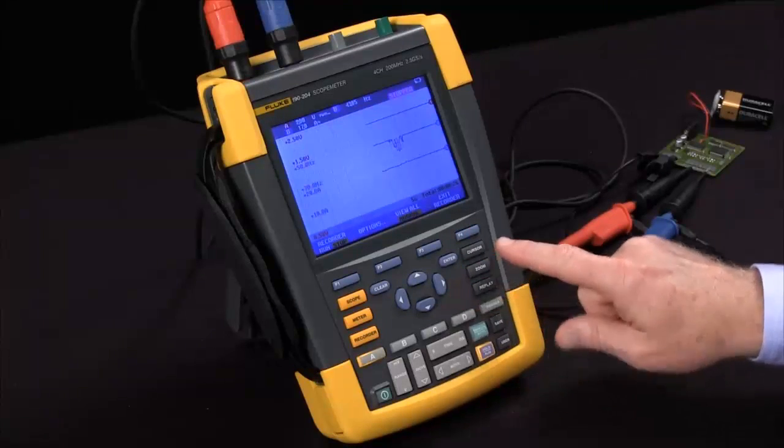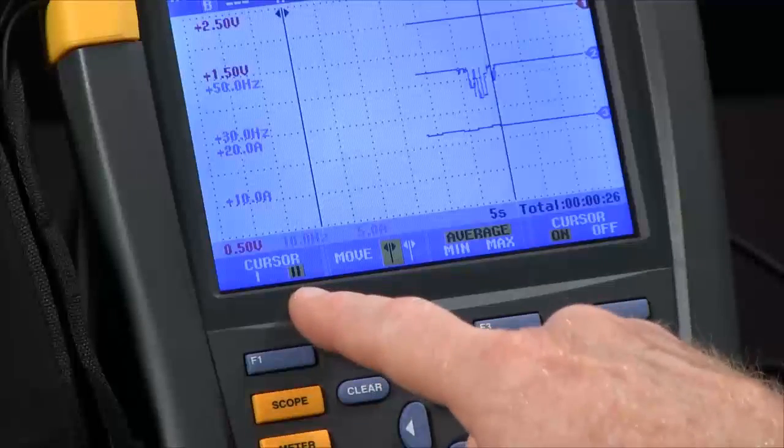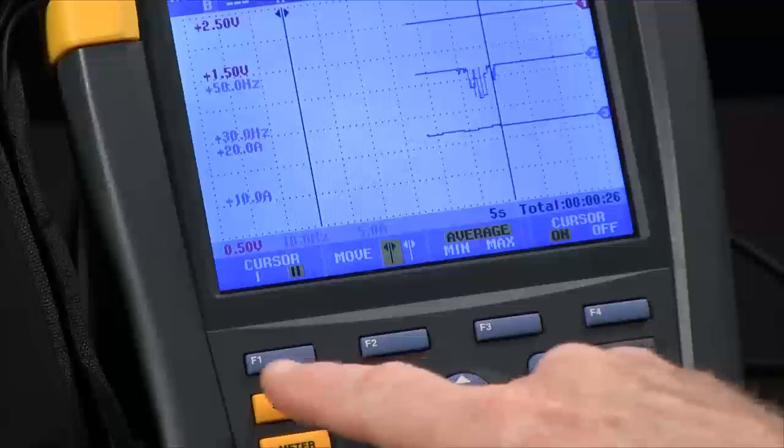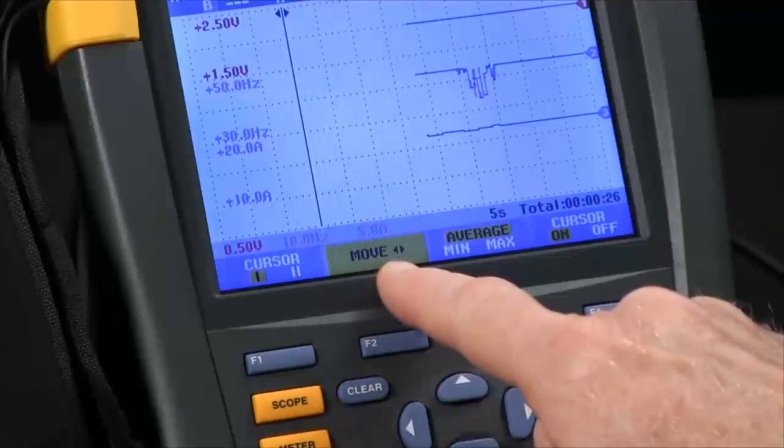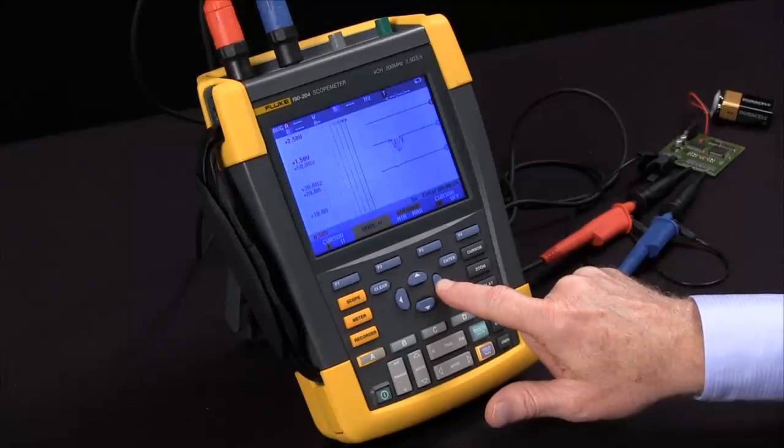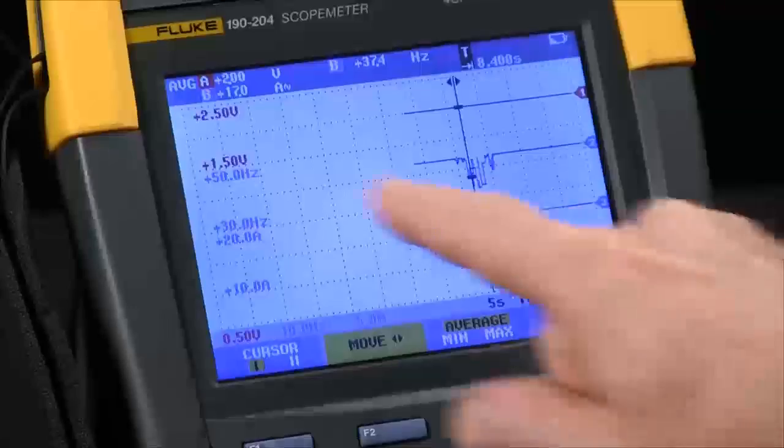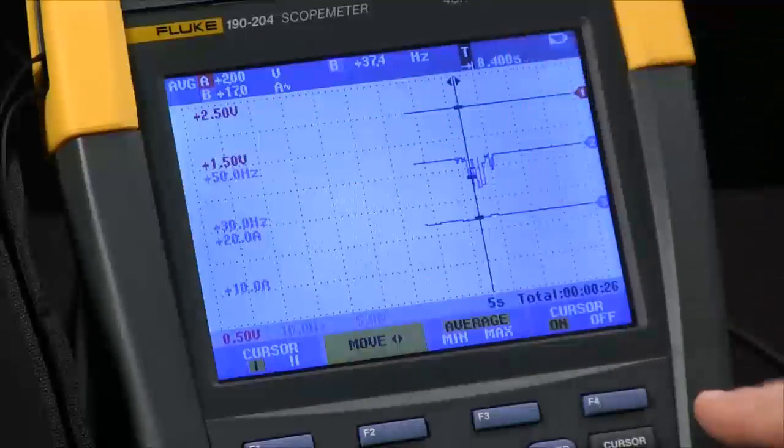When it comes to analysis, I might want to turn on a cursor. We start off with two cursors that give us a delta between the two positions. I want to choose a single cursor by selecting F1. And I can move that now with my arrow keys back onto the actual recording and see the voltage, frequency, and current at that point in time.